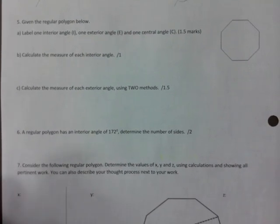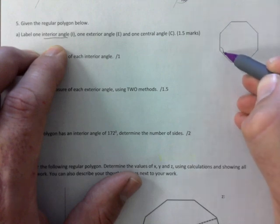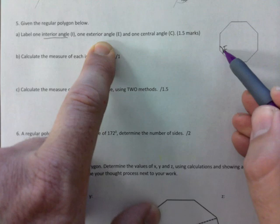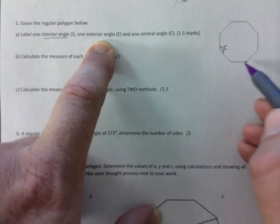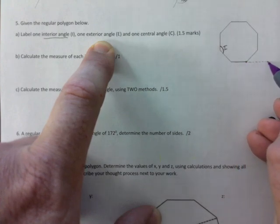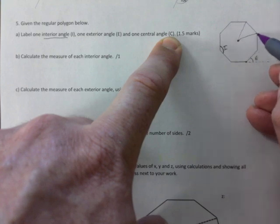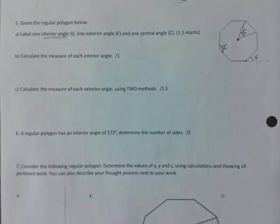Given a regular polygon, label one interior, one exterior, and one central angle. An interior angle is at any corner of the polygon. An exterior angle is found by extending one side at a corner. A central angle is formed by connecting the center to any side, making a triangle — that angle at the center is the central angle.